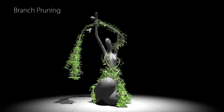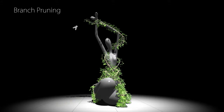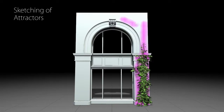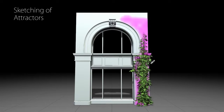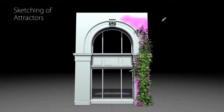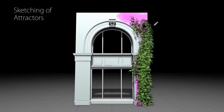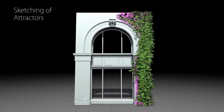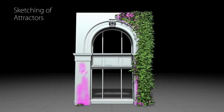The framework supports deleting and adding branches to locally prune or enhance the plant. The user is also able to sketch attractors on obstacle geometry to guide plant growth according to artistic requirements.